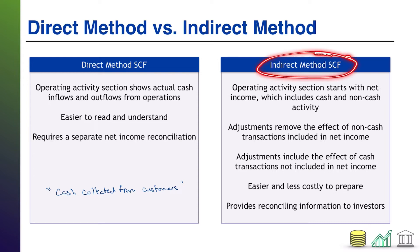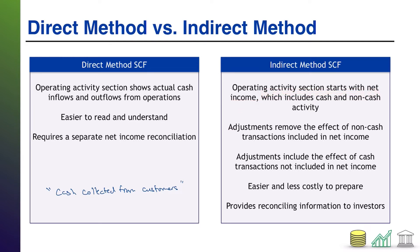Now let's talk about the indirect method statement of cash flows. This one is going to reconcile net income within the statement of cash flows itself, so the company isn't going to have to prepare a separate reconciliation because it's already in there. Remember, it's only the operating section that changes, and in the indirect method, the operating section is going to start with net income — that's literally the first line, net income, followed by the dollar amount, which is an exact copy from the income statement.